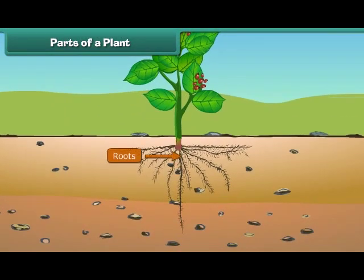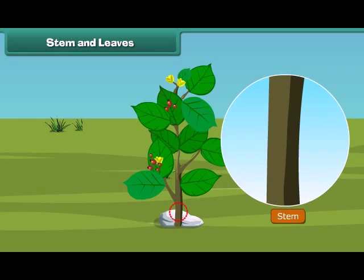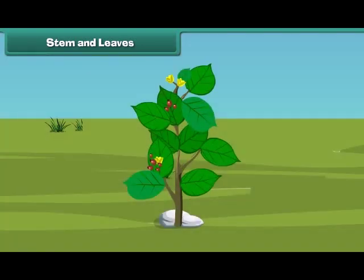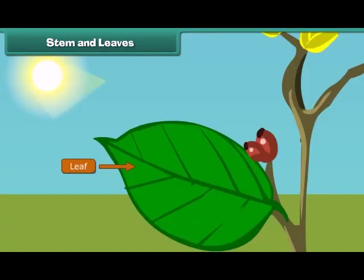Roots are the lower part of a plant. They grow in soil and help the plants to get water and minerals from the soil. The next part of the plant is the stem. A stem is the hard part of the plant which grows above the ground. It bears leaves, fruits, and flowers. A stem also supports the plant. Do you know which part of the plant helps it to prepare food? That's right — it is the leaves. Leaves are green in color and are born out of a stem.